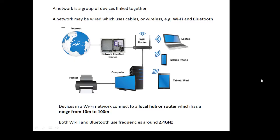A network is a bunch of devices linked together. A network may be a wired network, which uses cables, or you can have a wireless network — for example, Wi-Fi and Bluetooth are wireless. With Wi-Fi, you need something called a router. Devices in Wi-Fi networks connect to a local hub or router, and the range of Wi-Fi is from 10 meters to 100 meters. Wi-Fi and Bluetooth use approximately the same frequencies, about 2.4 gigahertz — strictly speaking radio, but very close to microwave.